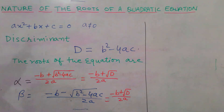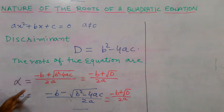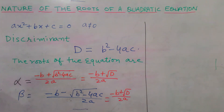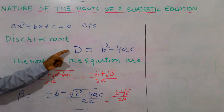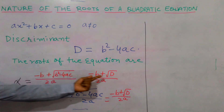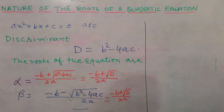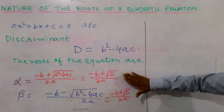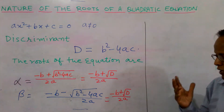The roots of this quadratic equation are: alpha, taking the plus sign, and beta, taking the minus sign. This value b² - 4ac, we call it capital D, the discriminant. So in place of b² - 4ac, we can write capital D.